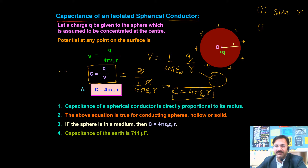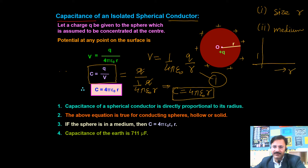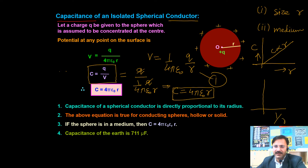If we plot the graph between R (size) and capacitance, it will be a straight line passing through the origin, since C is proportional to R. Instead, if we plot the graph between capacitance and 1/R, it will be a rectangular hyperbola.